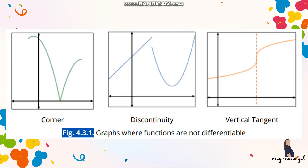For example, graph one: if your function has a corner, this function is continuous, but at that corner point it is not differentiable. The right hand derivative and left hand derivative will be different in value. So if there is a corner in the graph, it is automatically not differentiable.